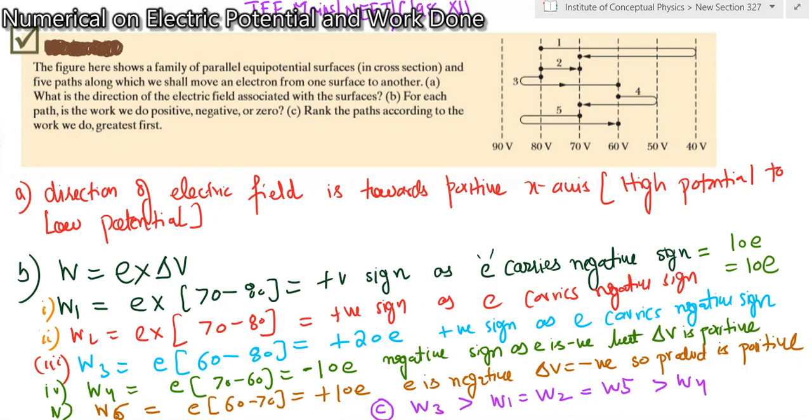So the first work done is positive, the second work done is positive, the third work done is positive, and the fourth work is negative, and the fifth work is also negative. You can see the product of charge and the change in potential is deciding the work done.